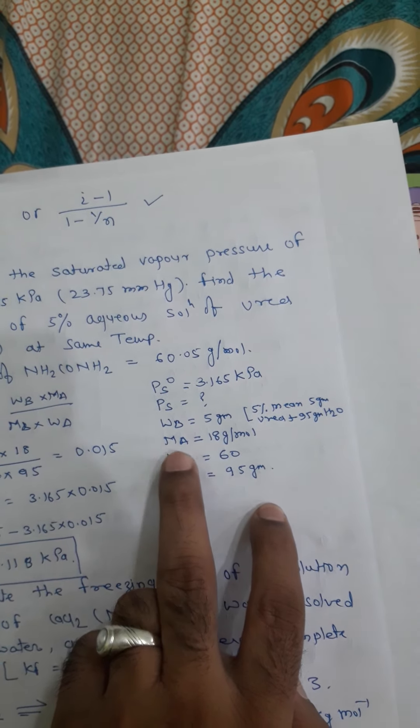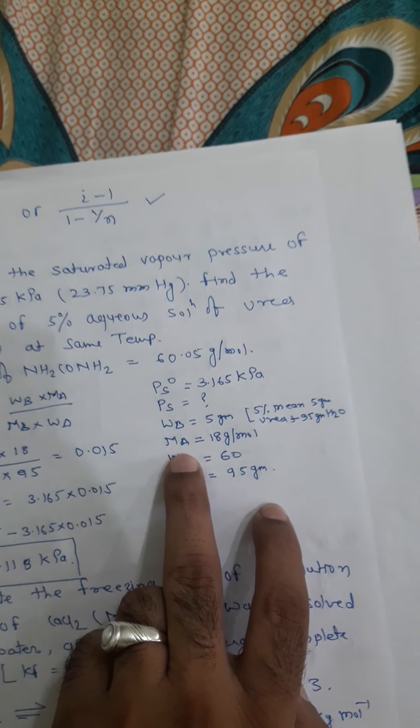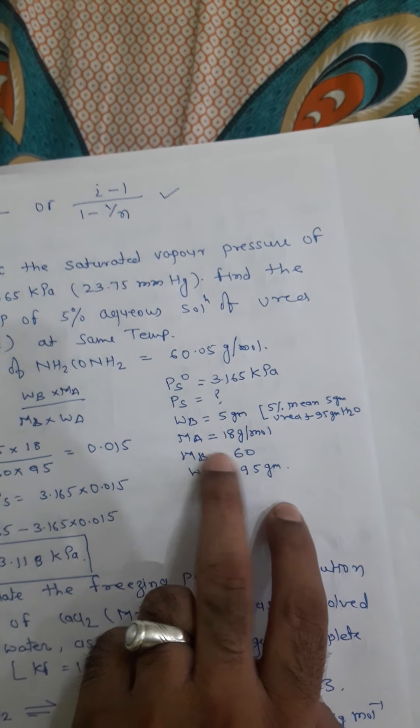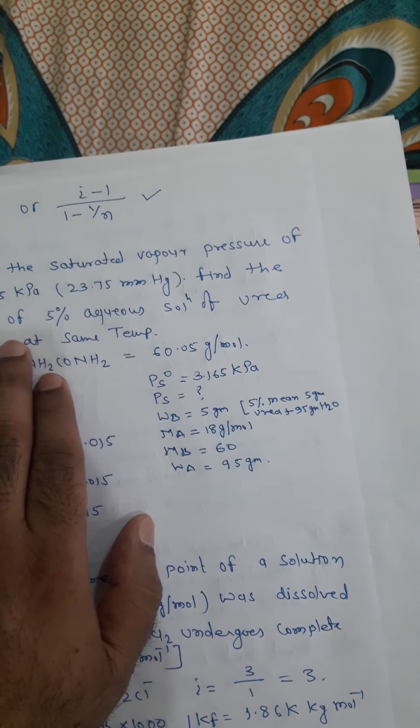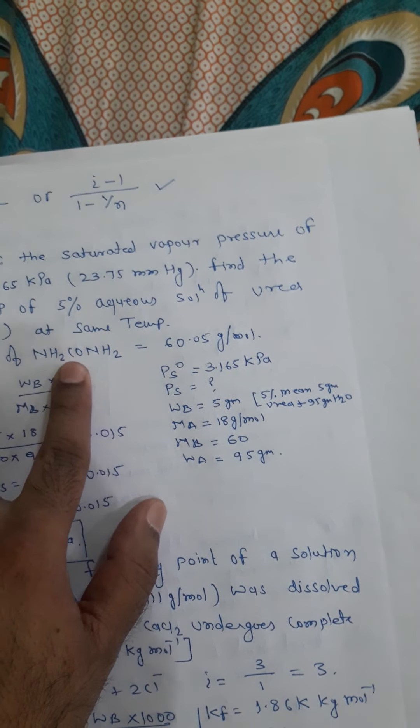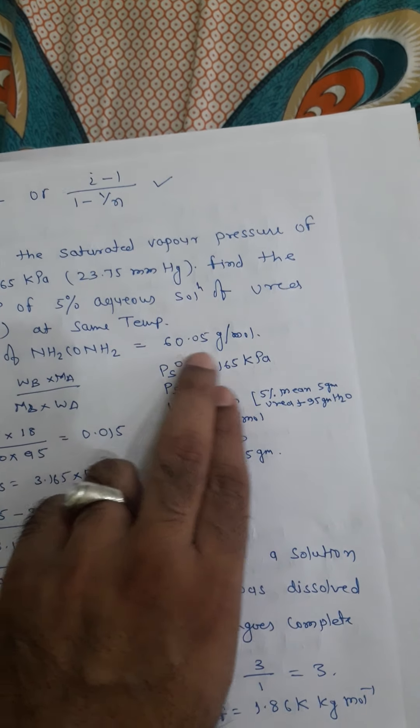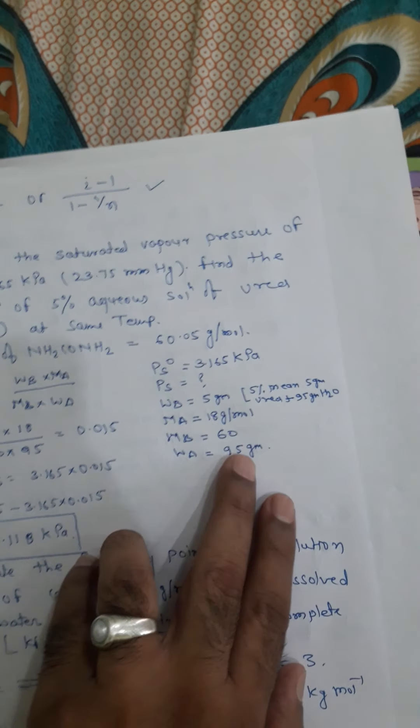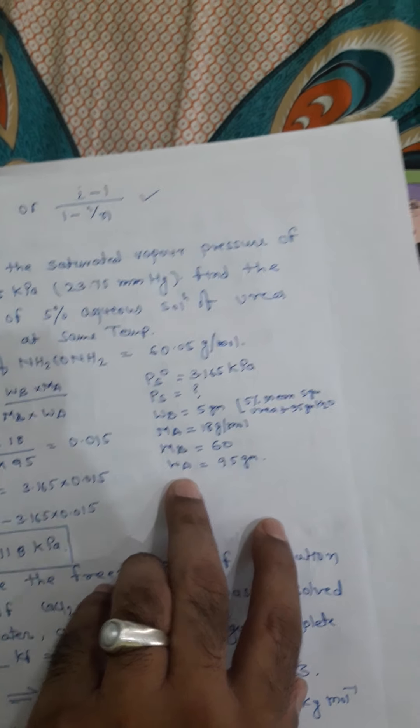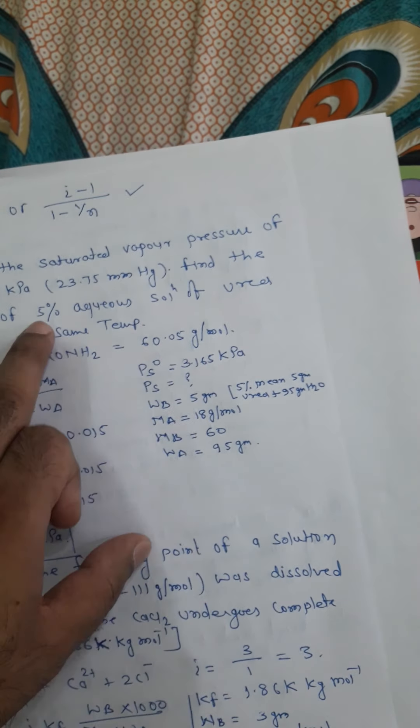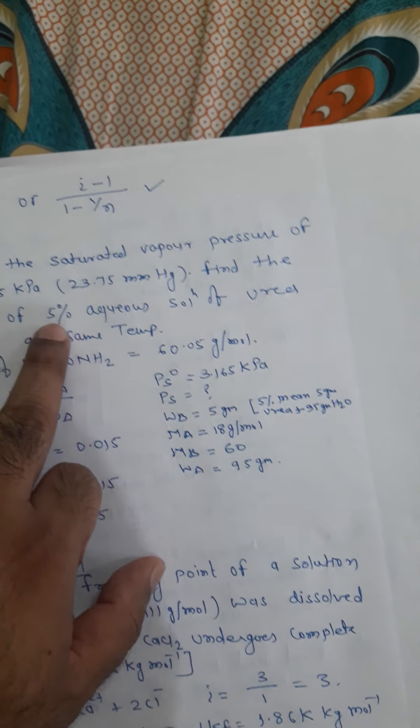That means 5 gram solute and 95 gram solvent. Since it is given 5 percent aqueous solution, that means aqueous is 95 and solute is 5 gram. MA is the molecular mass of solvent. Solvent is aqueous in water, therefore it is 18 gram per mole.